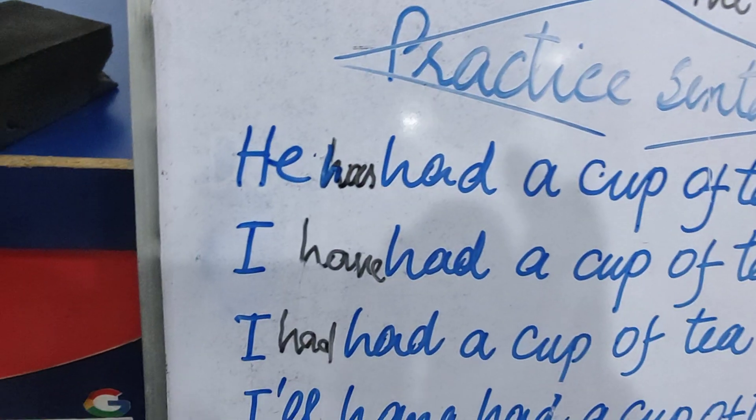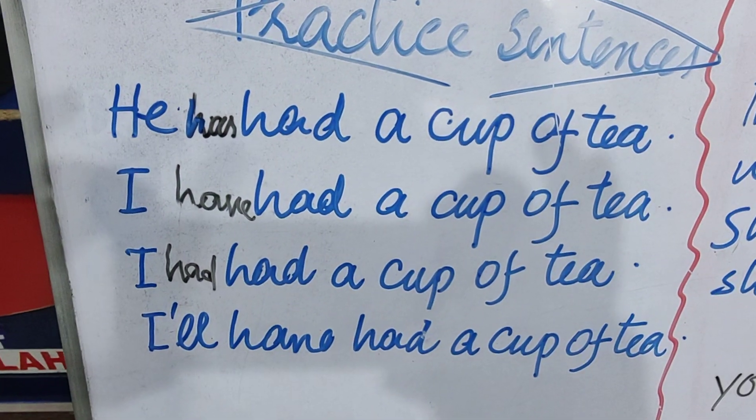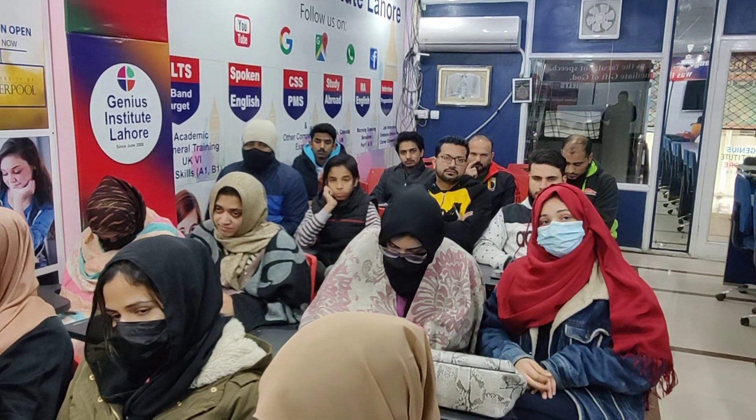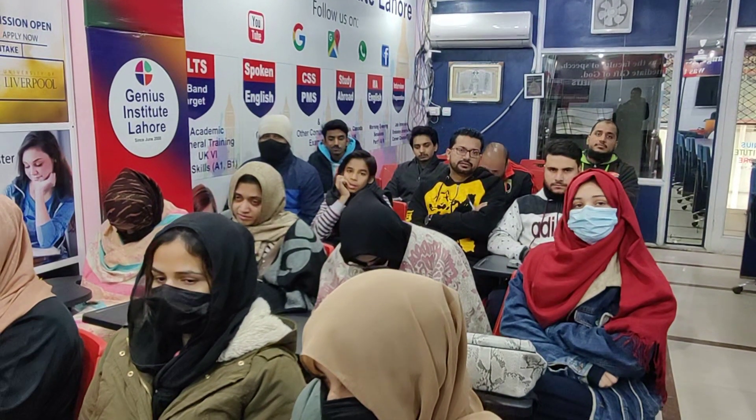Past perfect میں چلتے ہیں: 'I had had a cup of tea' — میں چائے کا ایک cup پی چکا تھا۔ پہلا had آپ کا auxiliary verb ہے اور دوسرا had main verb ہے — drink کی sense میں، یعنی I had drunk a cup of tea۔ Negative: 'I hadn't had a cup of tea' — میں چائے کا ایک cup نہیں پی چکا تھا۔ Interrogative: 'Had I had a cup of tea?' Negative interrogative: 'Hadn't I had a cup of tea?' اور 'Why had I had a cup of tea?'